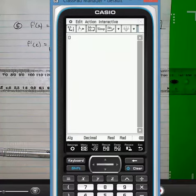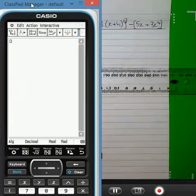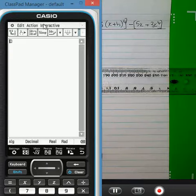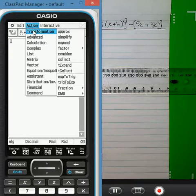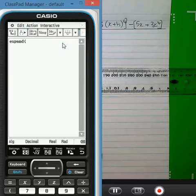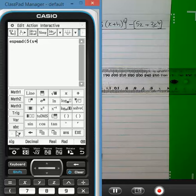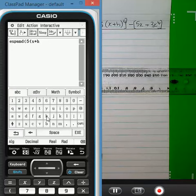So in order to do that, I'm going to use the action menu. I could use interactive transformation, and I'm going to expand. Now I'm going to expand five lots of x plus h. To find the h, I'll bring up a keyboard. Alpha will do the job there.